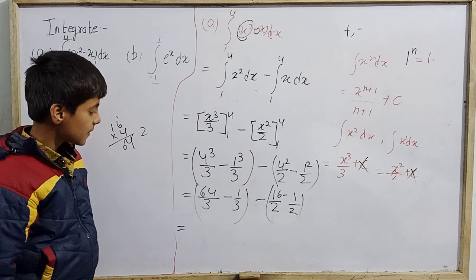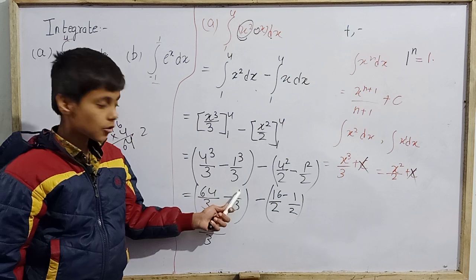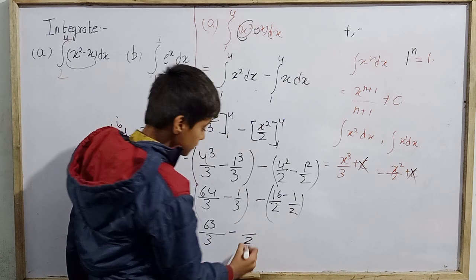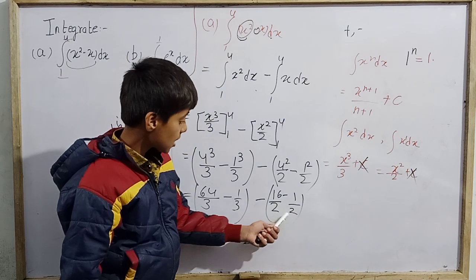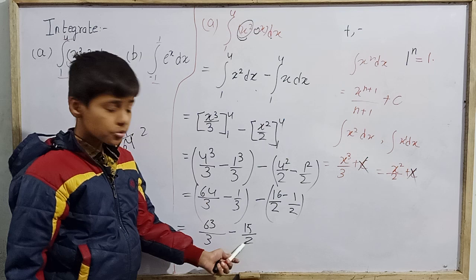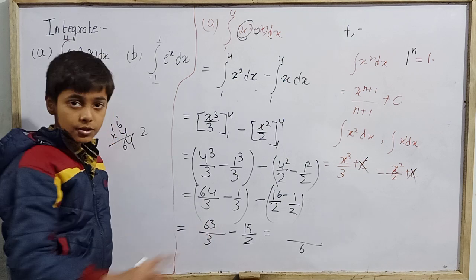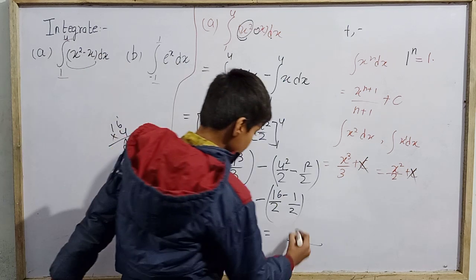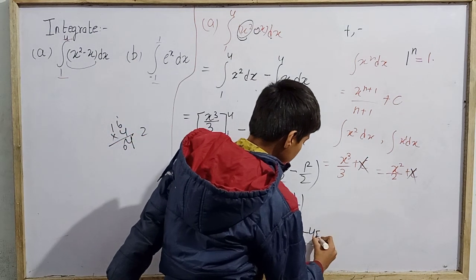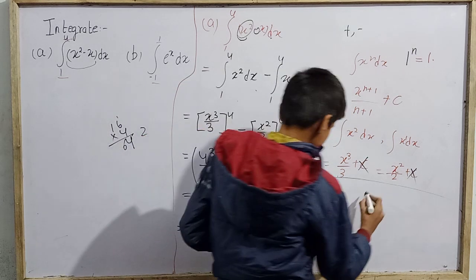Taking LCM of 3 and 2, which is 6: we get (2×63 - 3×15) / 6 = (126 - 45) / 6 = 81/6.